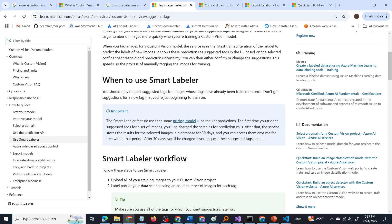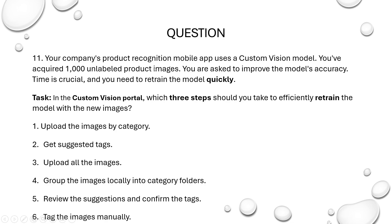When should you use smart labeler? You should only request suggested tags for images whose tags have already been trained on once. Don't get suggestions for a new tag that you are just beginning to train on. Now, our model is an already existing model — it is already trained with the product images of our company. We now have more product images which are the same kind but might be in different lighting or from different angles.